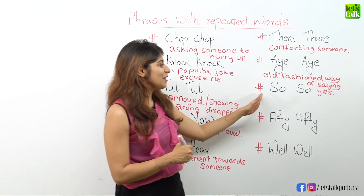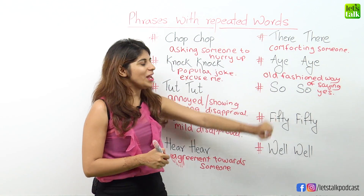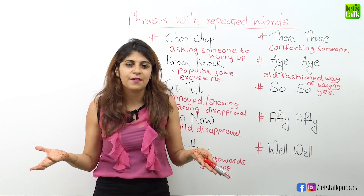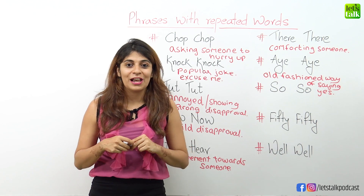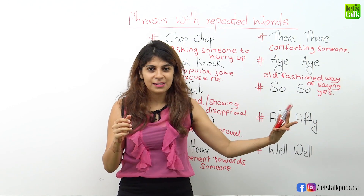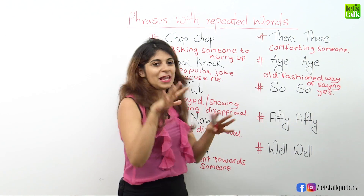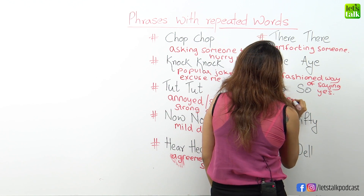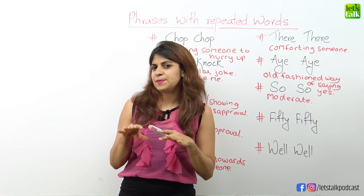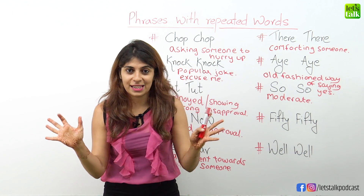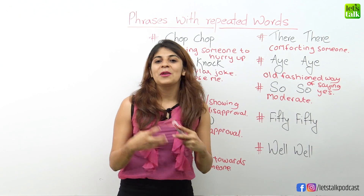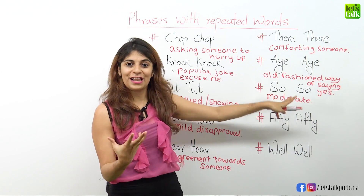Let's move on to another phrase, which is 'so-so'. When do you use this phrase? Well, when something is not very good and neither is it very bad. For example, someone asks you how the movie was — you'd say 'it was so-so', meaning the movie was not that great but not bad either. I went to this new restaurant last weekend and the food there is absolutely so-so — it's not amazing but it's not bad either. So when something is moderate, you use the phrase 'so-so'.